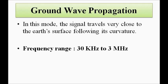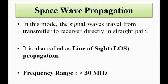Next is space wave propagation. In this mode, the signal travels from the transmitter to the receiver directly in straight paths. It is called line-of-sight propagation, and the frequency range is greater than 30 megahertz.